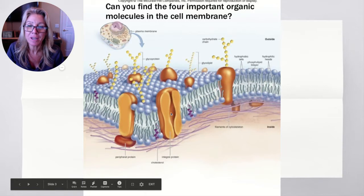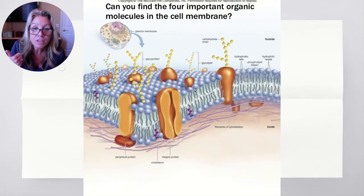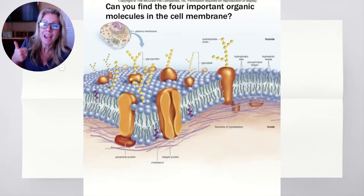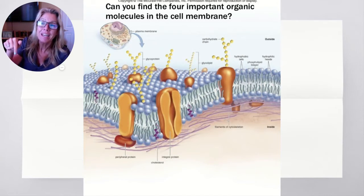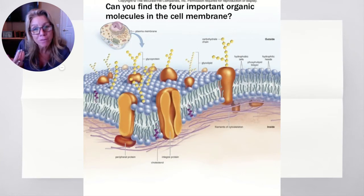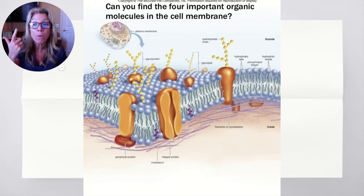These big orange things labeled proteins are in fact proteins — that's one. These that look like a circle with little legs dangling down are phospholipids, which are a modification of a fat. Remember, fat is a glycerol molecule with three fatty acid chains. So we have lipids.